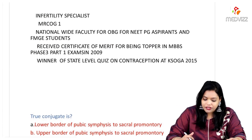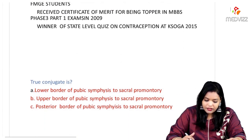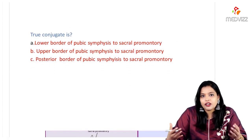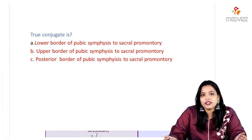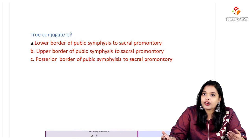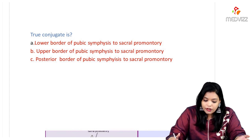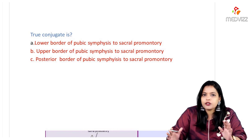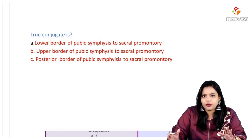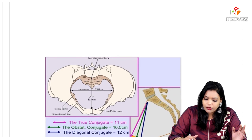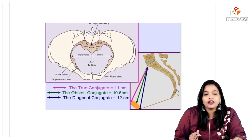Let's start with the first question: 'True conjugate is.' The options included lower border of pubic symphysis to sacral promontory, and upper border of pubic symphysis to sacral promontory. By the options you might get confused, but I have a very simple way for you to remember the conjugates.